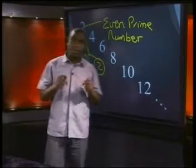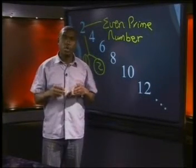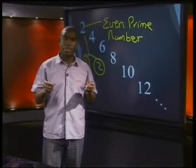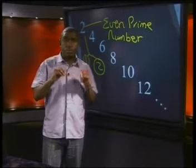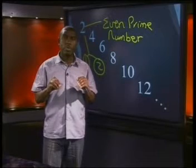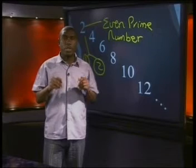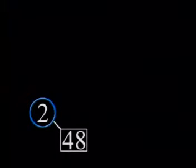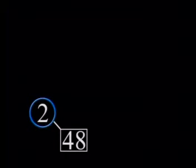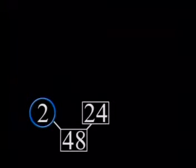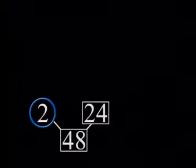Now that you know what a prime number is, we can do some prime factorization. When we prime factorize a number, it means we have to break it down into a product of numbers which are all prime. Have you ever seen a factor tree? I'll show you how to draw one. We will start with the number 48. We start with the lowest prime number, which is 2. Is 2 a factor of 48? Yes. 48 is equal to 2 times 24 — so these are our first branches.